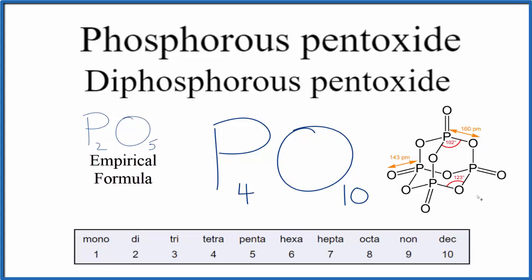But the molecule, the way it's arranged here, we have 4 phosphorous atoms and then 10 oxygen atoms. So the actual molecule has 4 phosphorous and 10 oxygens all bonded together.